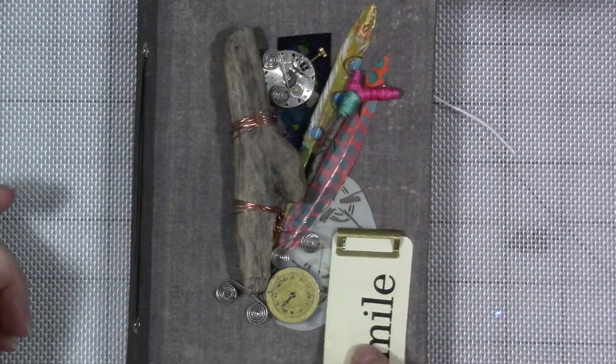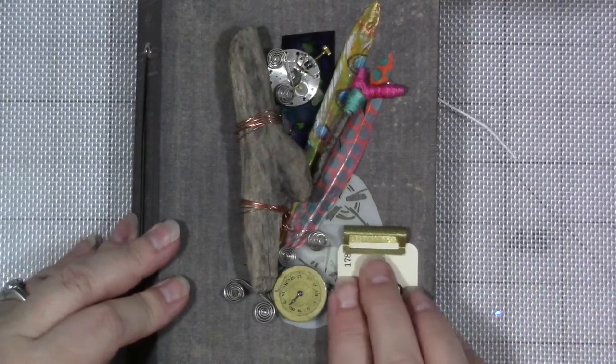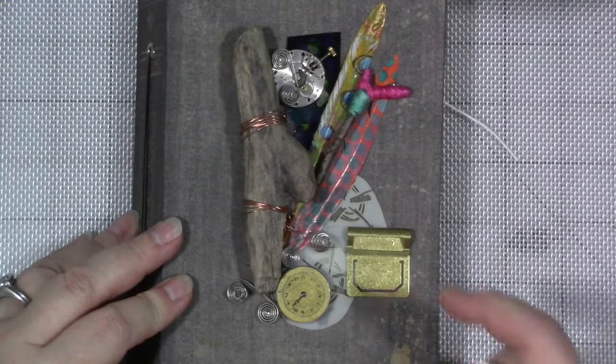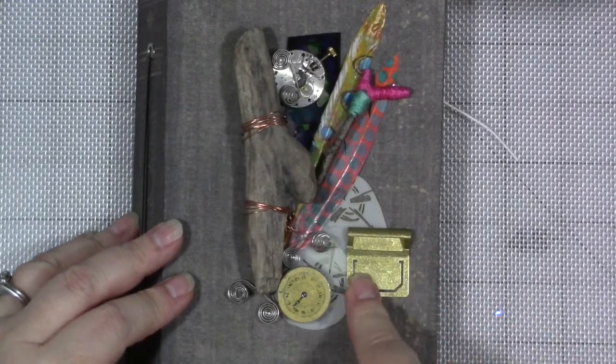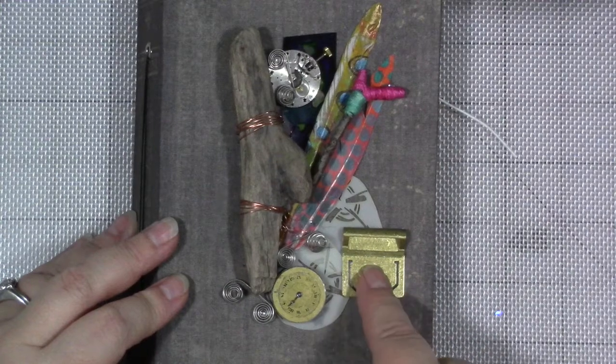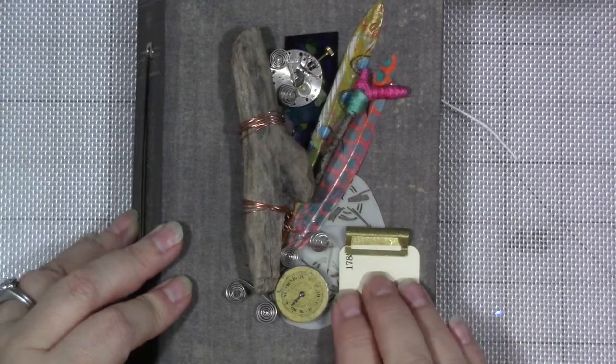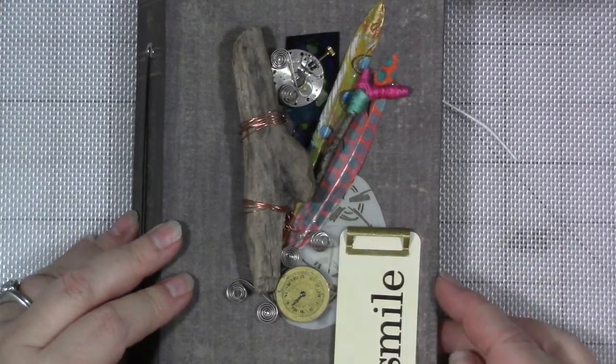This is a Tim Holtz word card from one of his mini decks of cards, the one that he has as just words. This brass clip—you can find these in a lot of places. These were originally, as far as I know, made for Midori Traveler's Notebooks. I got these off of Wish for a couple bucks. They weren't expensive. And I just shoved that in there.